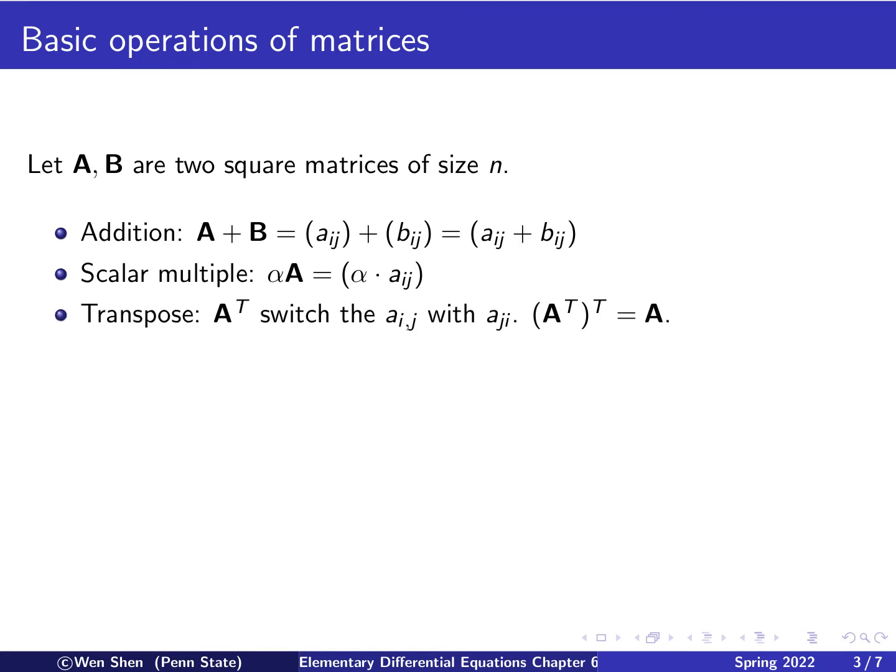The third operation is called the transpose, which is written as capital A with a capital T on the superscript. That means it's also a square matrix, but where you switch the elements a_ij and a_ji. You switch their positions. So obviously, if you transpose a transposed matrix, you get it back. Because if you switch i, j and then switch it back again, you get the same matrix.